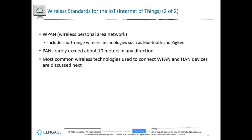We also have wireless personal area networks — PANs — a personal area network of less than 10 meters. The most common is a wireless PAN, and home access networks are getting big. In the future, you probably won't be able to buy a home without it built in.